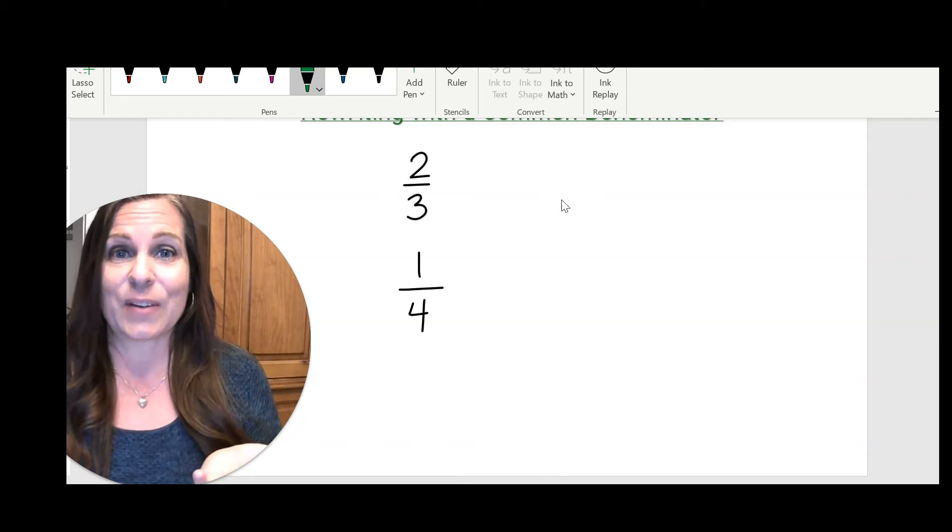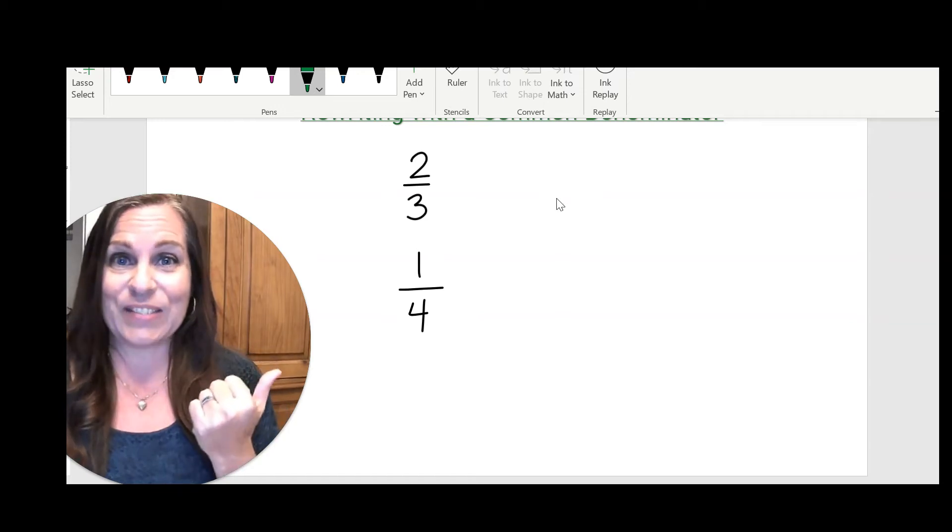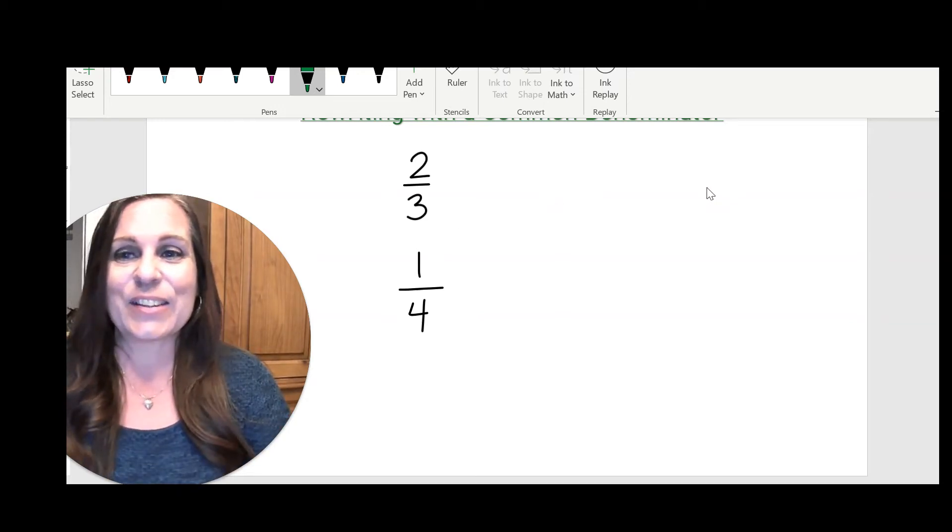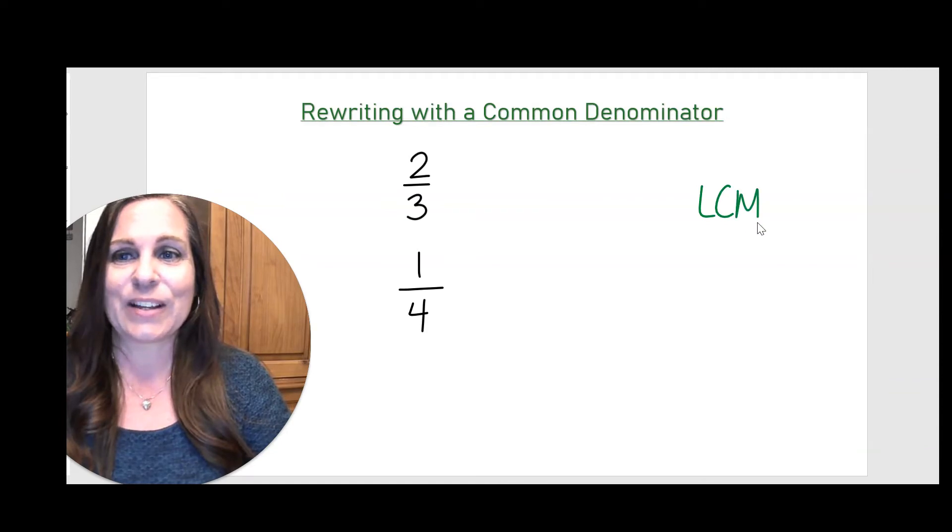That's as easy as finding the LCM. If you're not sure how to find the LCM of two numbers, check out my video on LCM. So the least common multiple of three and four is 12.